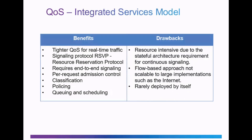Comparing this to the integrated services model and looking at some of the benefits and drawbacks: under benefits, the INTSERV model has tighter QoS for real-time traffic, uses the signaling protocol RSVP, or Resource Reservation Protocol. It requires end-to-end signaling and per-request admission control, and uses packet classification, policing, queuing, and scheduling. Under drawbacks, the INTSERV flow-based approach is not scalable to large implementations such as the internet, and the integrated services model is rarely deployed by itself alone.